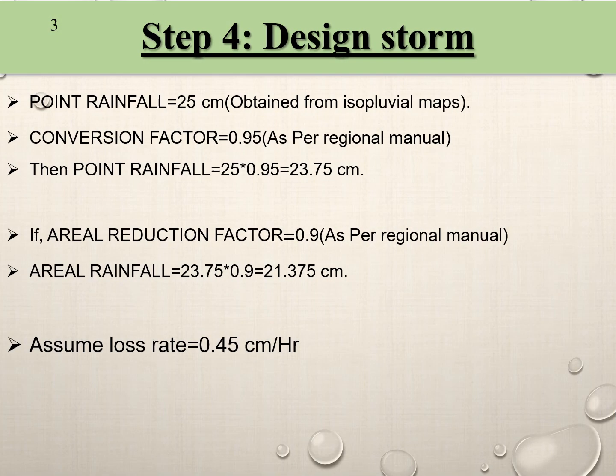In Step 4 we design the storm discharge. We take point rainfall equal to 25 centimeters, which is generally obtained from isopluvial maps — it depends on the region. Multiplying by a conversion factor of 0.95 as per the regional manual, we obtain point rainfall equal to 23.75 centimeters.